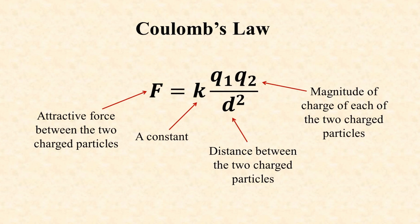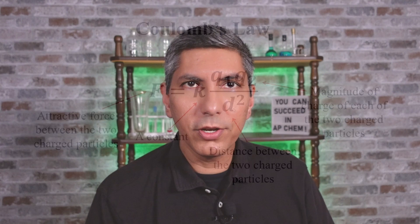However, you do have to know how these two variables relate to each other — Q, which is charge, and D, which is distance. You need to know that as the magnitude of charge of the particles goes up, so does the attractive force between the particles. And you also need to know that as the distance between two charged particles goes down and they get closer together, their attractive force goes up. You need to know about Coulomb's Law and be very familiar with this relationship, but you do not have to memorize that specific equation.